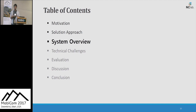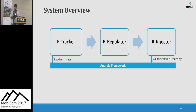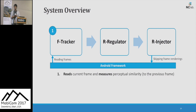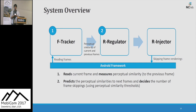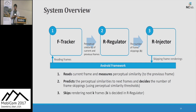I will briefly describe our system. Laban is developed by customizing the Android framework, and it consists of three parts: app tracker, R-regulator, and R-injector. They work in a pipeline fashion. First, app tracker reads a frame and measures the perceptual similarity of the current to the previous frame. Second, R-regulator predicts the perceptual similarity of the current frame to upcoming frames using the current similarity calculated in the app tracker, and it decides the number of frames to skip using some threshold values. After that, R-injector keeps rendering the next K frames, where K is decided by the R-regulator.